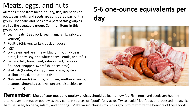Nuts and seeds include walnuts, pumpkin seeds, sunflower seeds, peanuts, almonds, cashews, pecans, pistachios, or mixed nuts. Remember, most of your meat and poultry choices should be lean or low fat. Fish, nuts, and seeds are healthy alternatives to meat or poultry as they contain good fatty acids. Try to avoid fried foods or processed meats like ham, sausage, bologna, salami, and hot dogs.